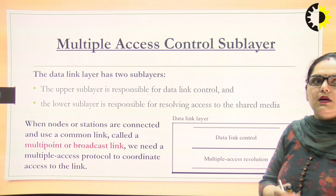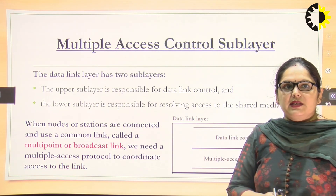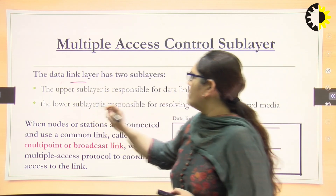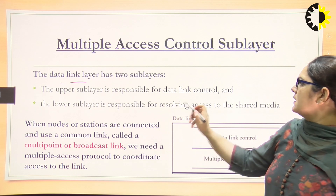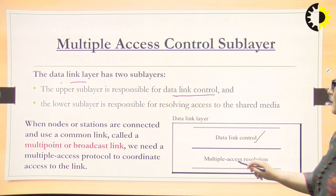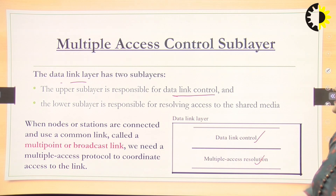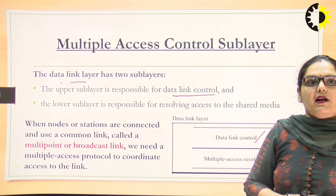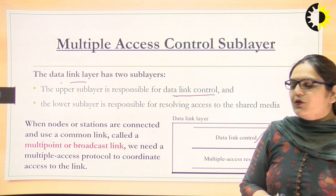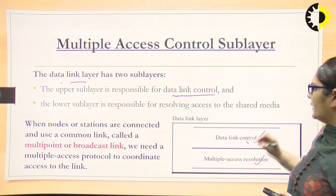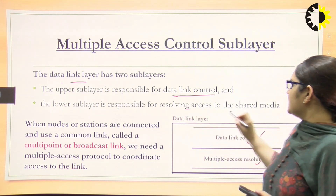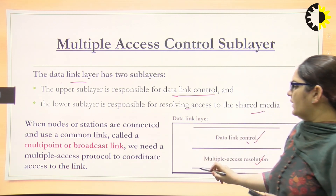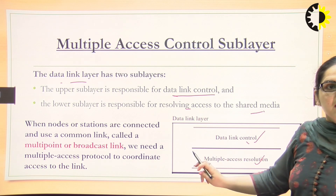What is the multiple access control sublayer? The second layer of the OSI model, that is the data link layer, is divided into two sublayers. One is the data link control layer and the bottom sublayer is the multiple access control sublayer. The upper sublayer is responsible for framing, flow control, and error control. For resolving access to the shared media by multiple devices, we have the lower sublayer, that is the multiple access control sublayer.